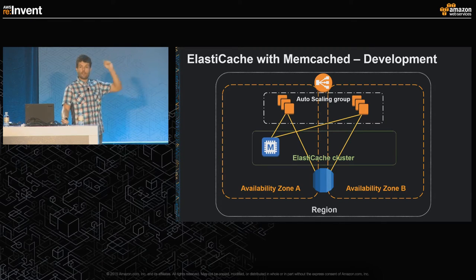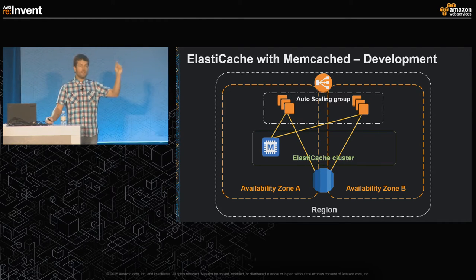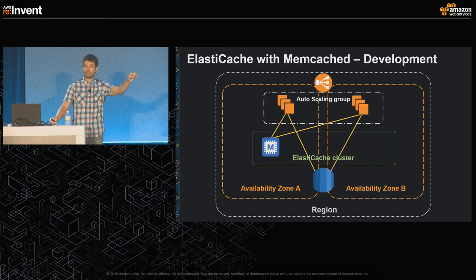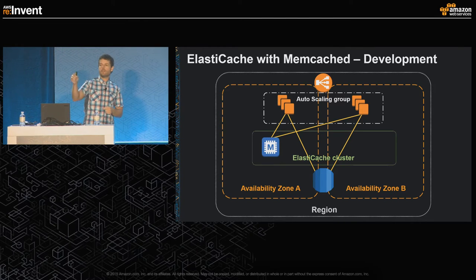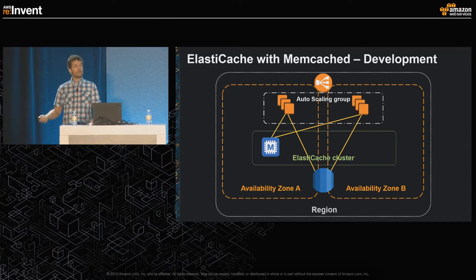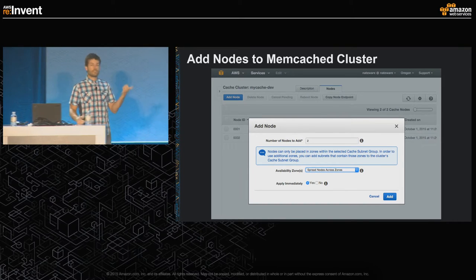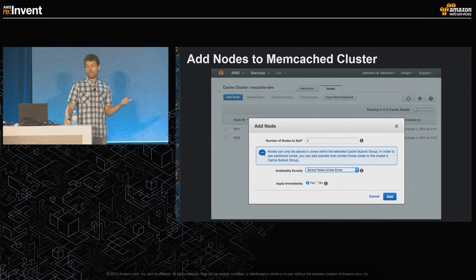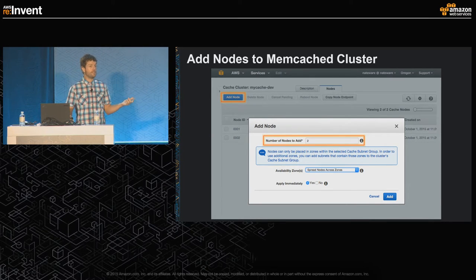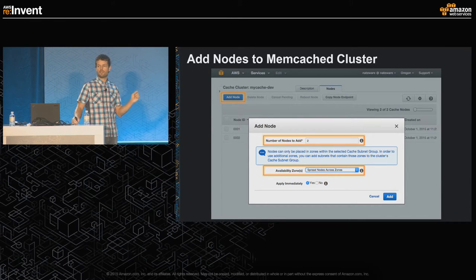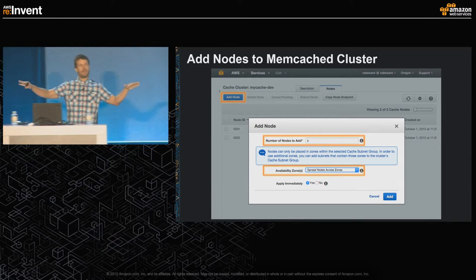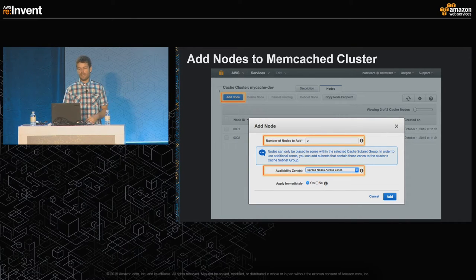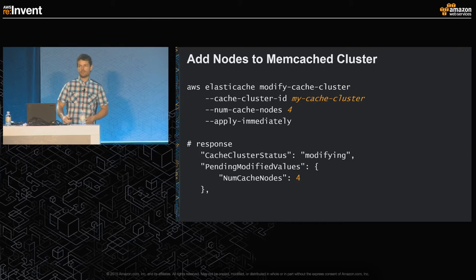Remember that your application tier is what's actually communicating with your Memcache node, not your database. Your application tier has a connection to your Memcache nodes and to your database or any other APIs, and it's responsible for managing which keys get put in and out of the cache. When it comes time for production, you scale it up easily through the ElastiCache console or command line API — click add node, specify the number, and choose how to distribute across availability zones. Just always choose the spread-across-availability-zones option and let ElastiCache do the heavy lifting.